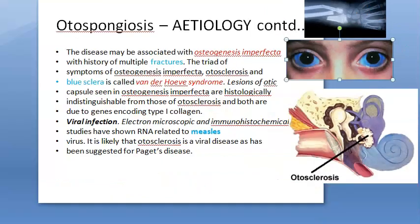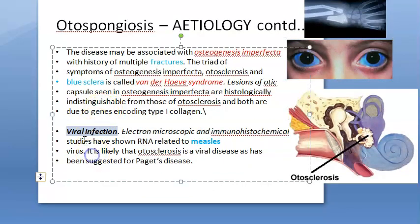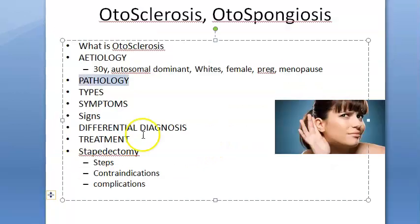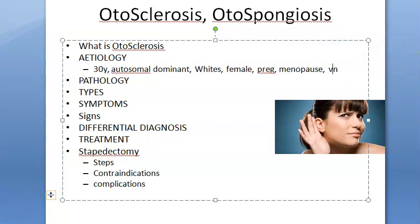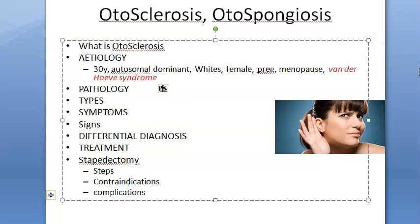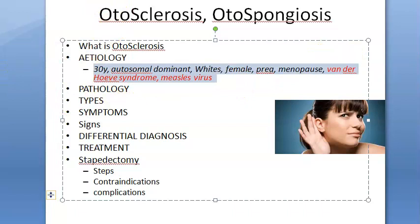Van der Hoeve syndrome consists of osteogenesis imperfecta, blue sclera, and otosclerosis together. Also, a viral cause is implicated — measles virus is blamed as one of the etiological factors for otosclerosis.